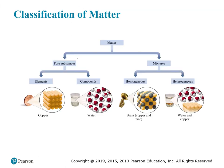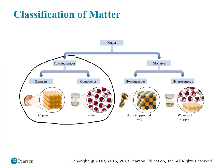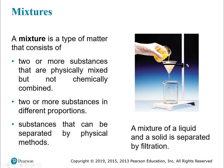We just covered pure substances and how elements and compounds fall underneath that. Now we'll talk about mixtures. A mixture has two or more substances that are physically mixed but not chemically combined. You can have different proportions — you can have a mixture with the same two ingredients present in different amounts. These substances can be separated by physical methods, like filtration shown in the picture.